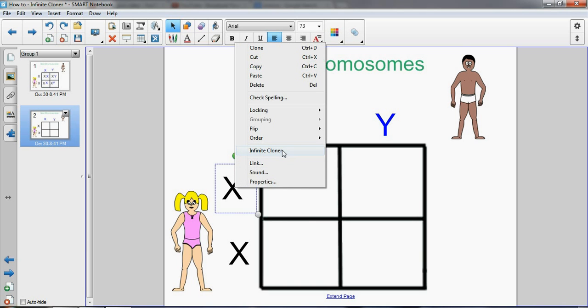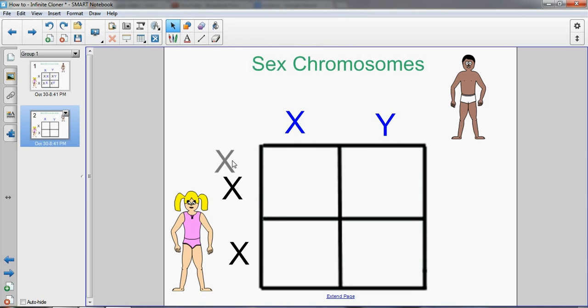We can right-click on the object and if we select infinite cloner, the object can now be cloned as many times as you want. That's about it.